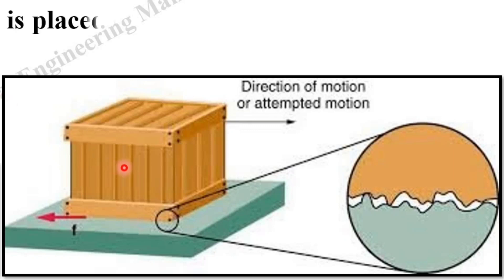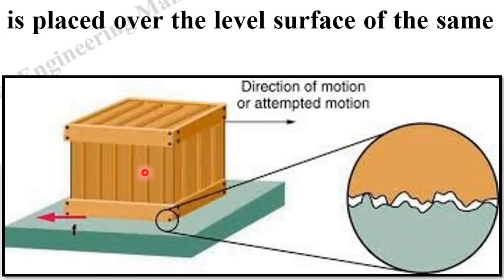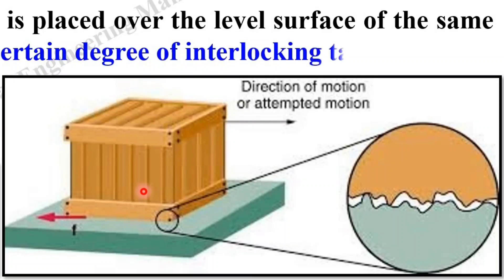If a block of one substance is placed over the level surface of the same or having different material, a certain degree of interlocking always takes place. This does not involve any force so long as the block does not move.